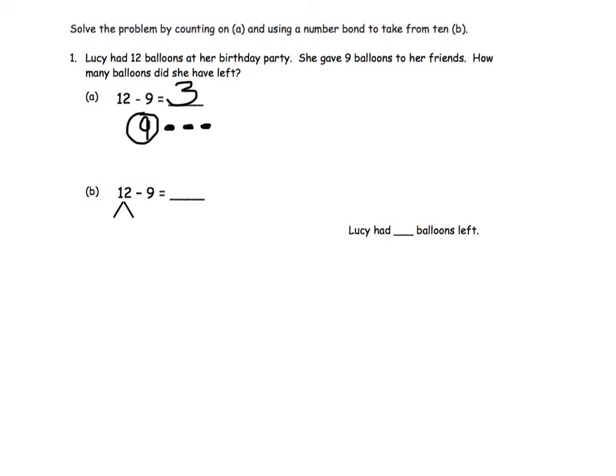In B, we are going to make a number bond with the 12. One of the numbers will be 10. 12 is our whole. 10 is part, so the other part will be 2. So we are no longer using the 12.